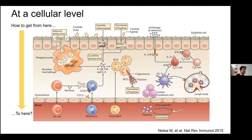The effector cells initially respond: epithelial cells produce defensins and recruit phagocytes. Candida then encounters resident macrophages. Neutrophils are recruited, they produce reactive oxygen species and neutrophil extracellular traps. They recruit monocytes and natural killer cells. But despite all this, Candida can still get past and breach the endothelium. Within the bloodstream, it needs to avoid all innate immune cells — neutrophils, monocytes, natural killer cells, and platelets.